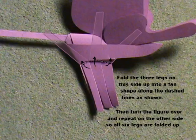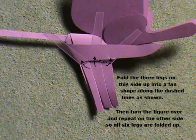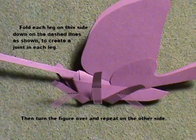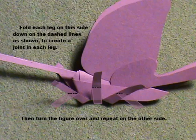Fold the three legs on this side up into a fan shape along the dashed lines as shown. Then turn the figure over and repeat on the other side so that all six legs are folded up. This photo shows all six legs folded up.